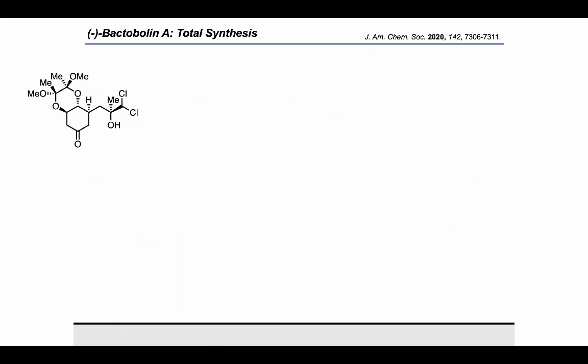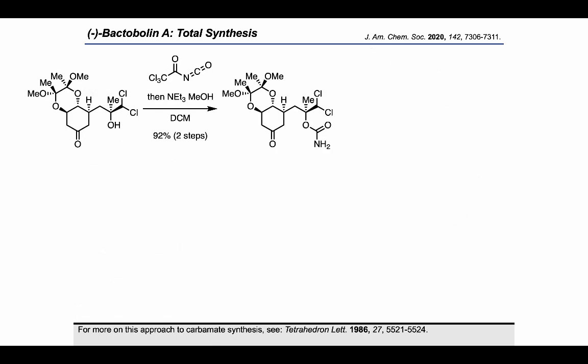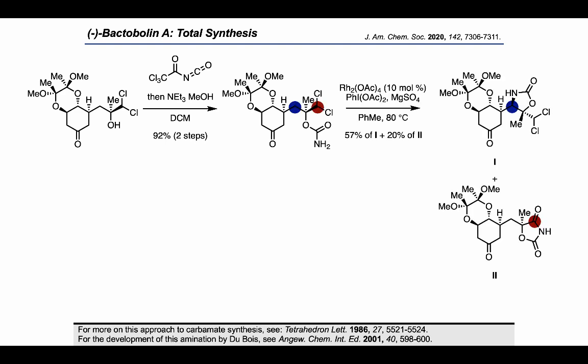The authors converted the tertiary alcohol into a carbamate, which was necessary in order to introduce the nitrogen present in the final target. Then, using C–H amination chemistry developed by Du Bois, the authors carried out a diastereoselective C–H amination to give the desired oxazolidinone product.